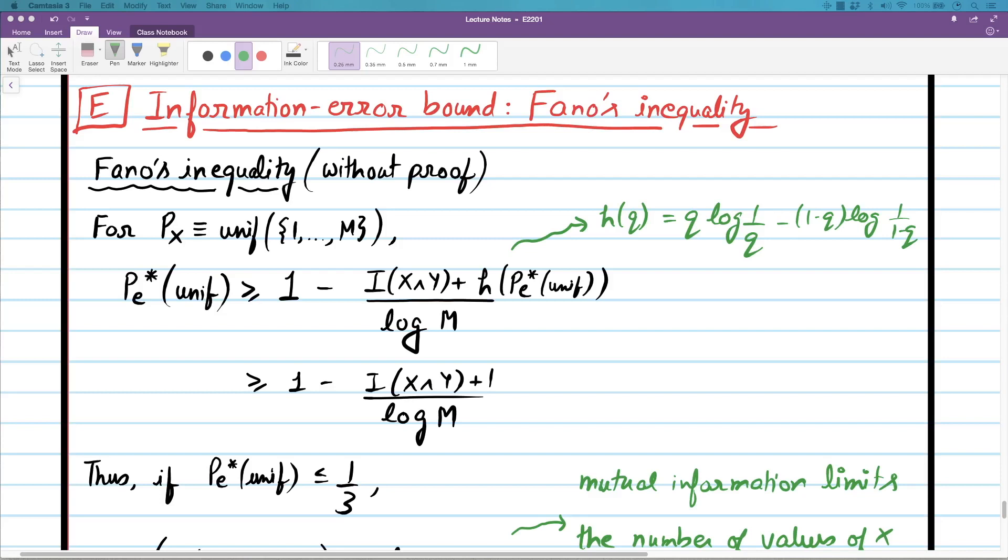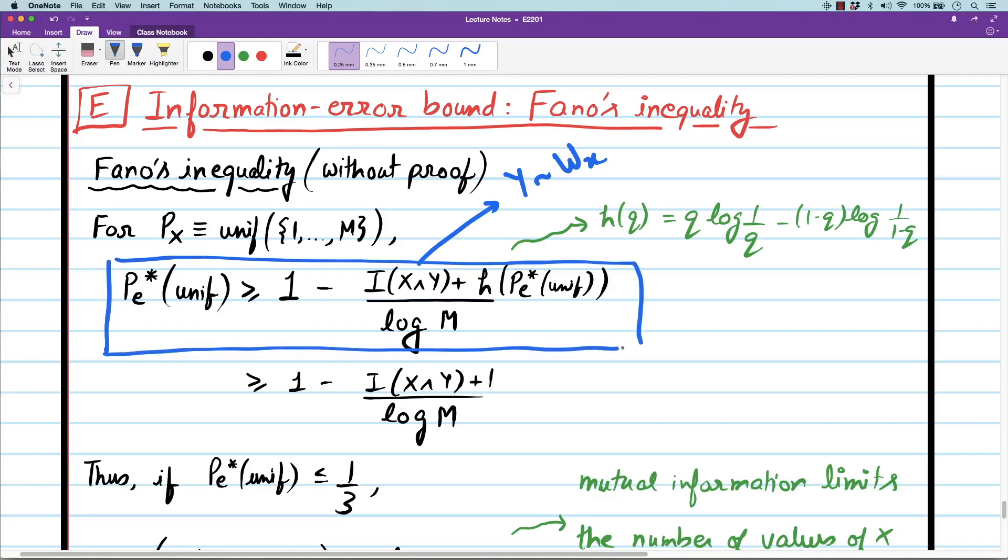This inequality relates the probability of error for an M-ary hypothesis testing problem under uniform prior to mutual information. Remember that the unknown is x and given x the distribution of y is this w_x channel. Fano's inequality says that the probability of error can be bounded below depending on how much the mutual information is. This probability of error cannot be made 0 arbitrarily.